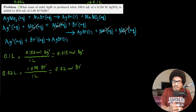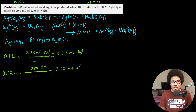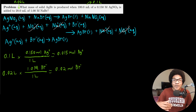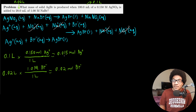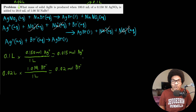Now the question is which reactant do we use? We have to figure out which one is going to run out first — the limiting reactant. Since there's a one-to-one ratio between silver ions and bromide ions, we can just inspect these two numbers: we have less silver (0.015 moles) than bromide (0.02 moles), so we're going to run out of silver ions first. Silver is the limiting reactant.